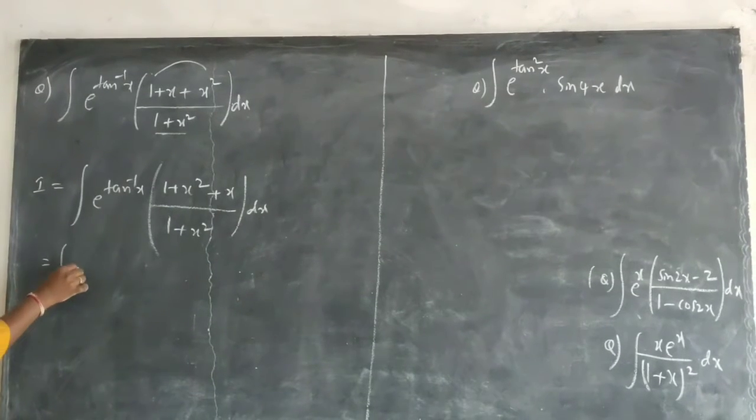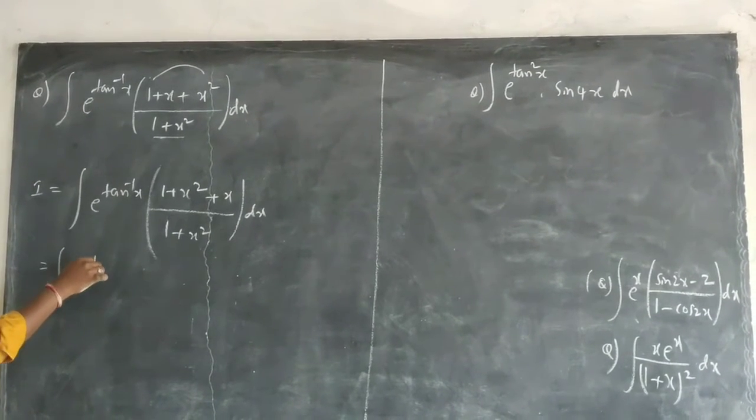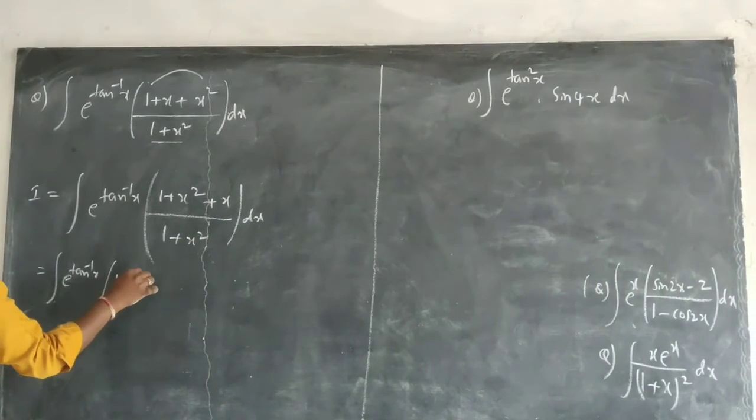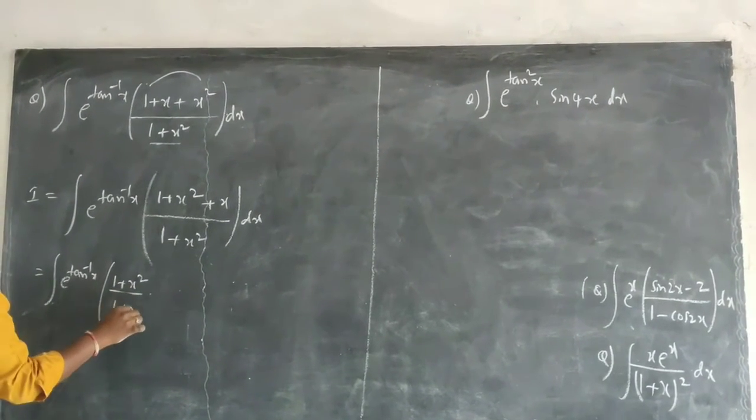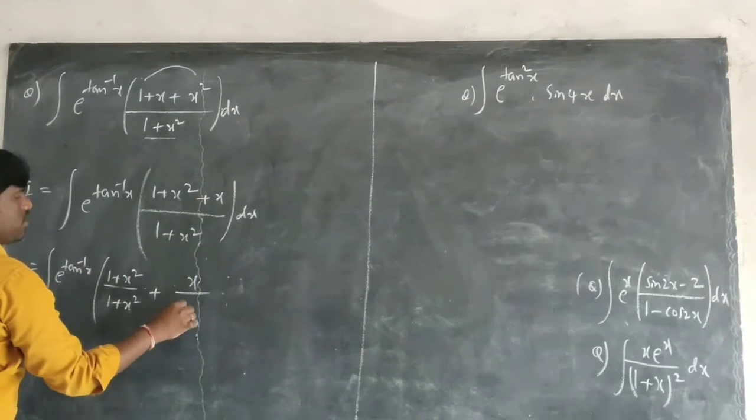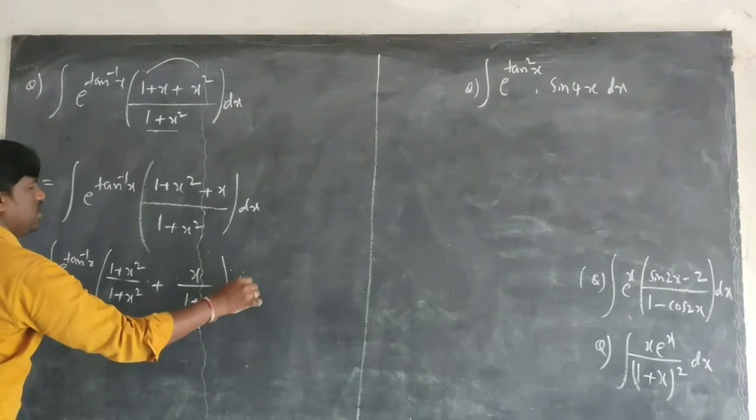(1+x²) plus x upon (1+x²) dx. Now, subtract the terms here. I is equal to e^(tan^(-1)x). I subtract this one, so this is separated: (1+x²) divided by (1+x²) plus x upon (1+x²) dx.